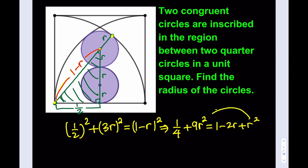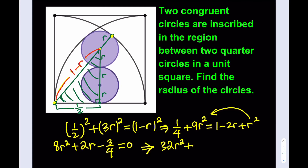If I go ahead and bring everything to this side, I'll be getting 8R² plus 2R, and then bringing over the 1: 1/4 minus 1 is going to be negative 3/4. To make things a little easier, let's go ahead and multiply both sides by 4 — we'll get rid of the fractions. So that's going to be 32R² plus 8R minus 3 equals 0.